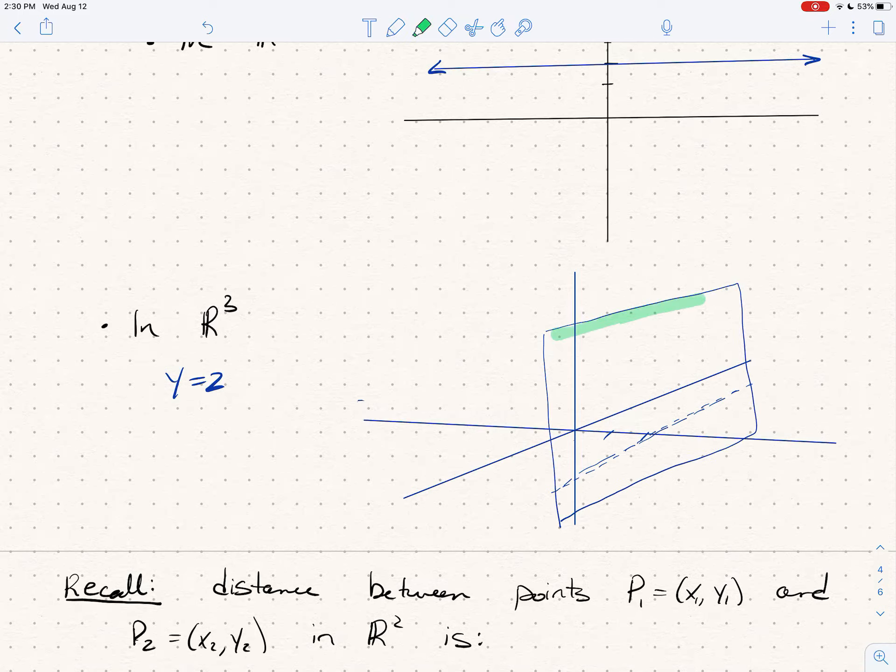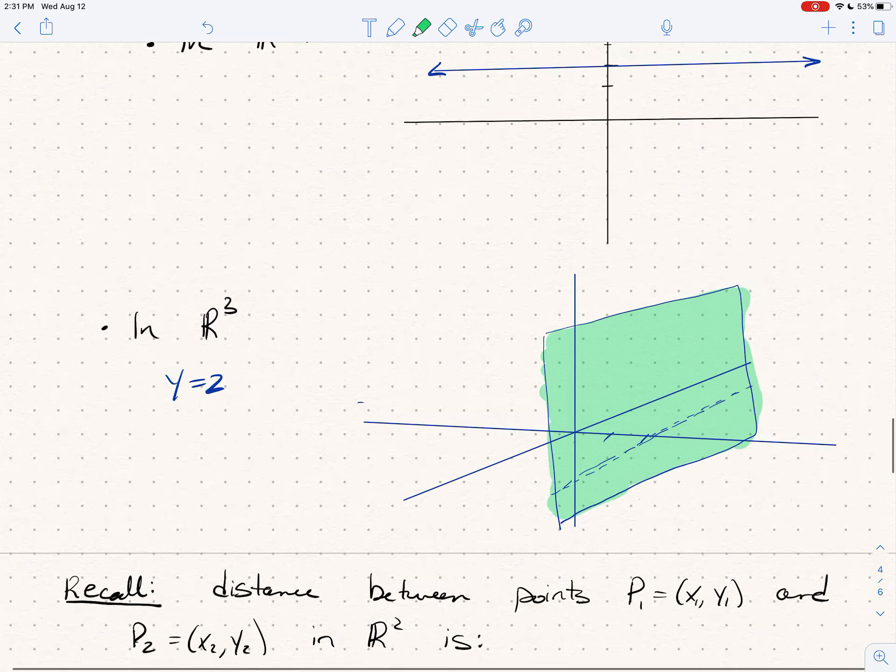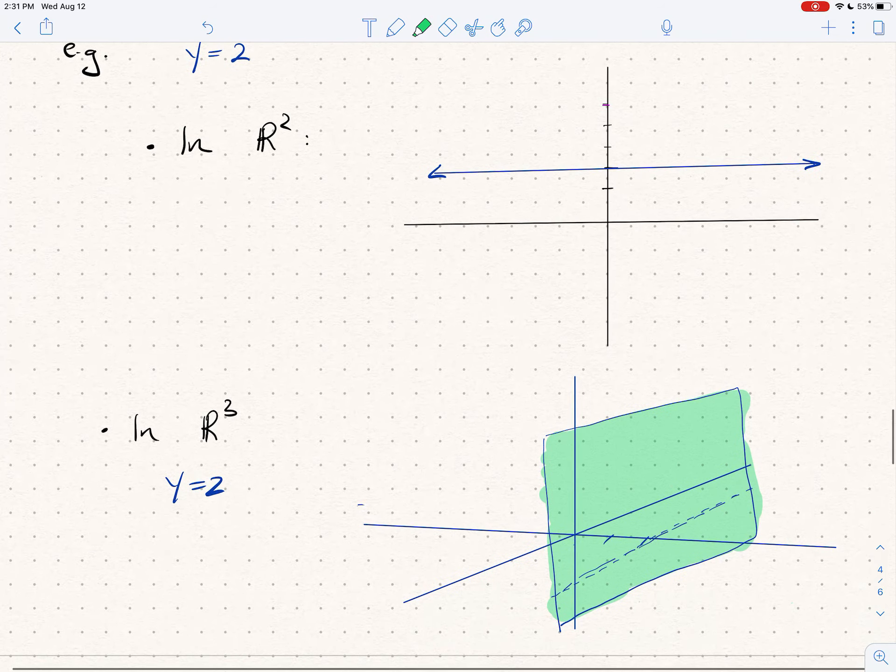I don't know if you can kind of make that out but I get this plane along y equals 2. So I can stretch anything in z that I want, anything in x that I want, I just keep the y-coordinate fixed at 2, that gives me a plane.